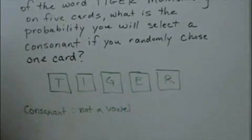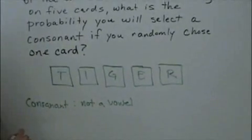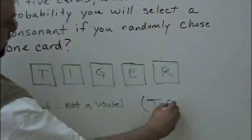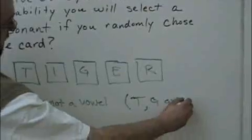So in this case, the word TIGER has three consonants. The consonants are T, G, and R.